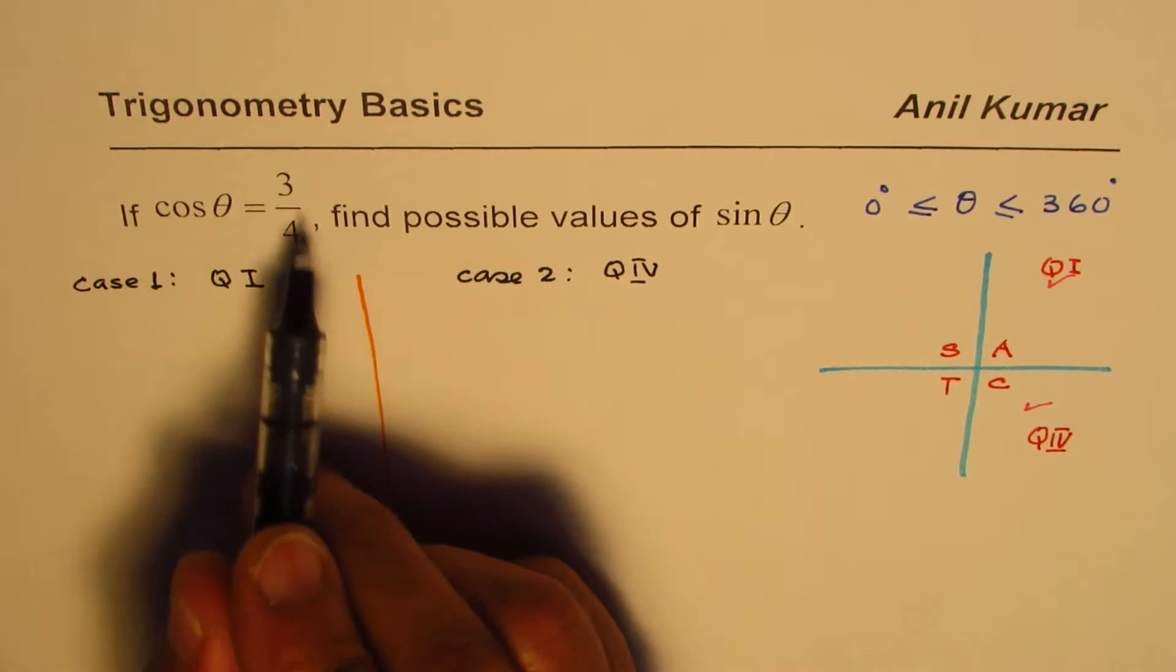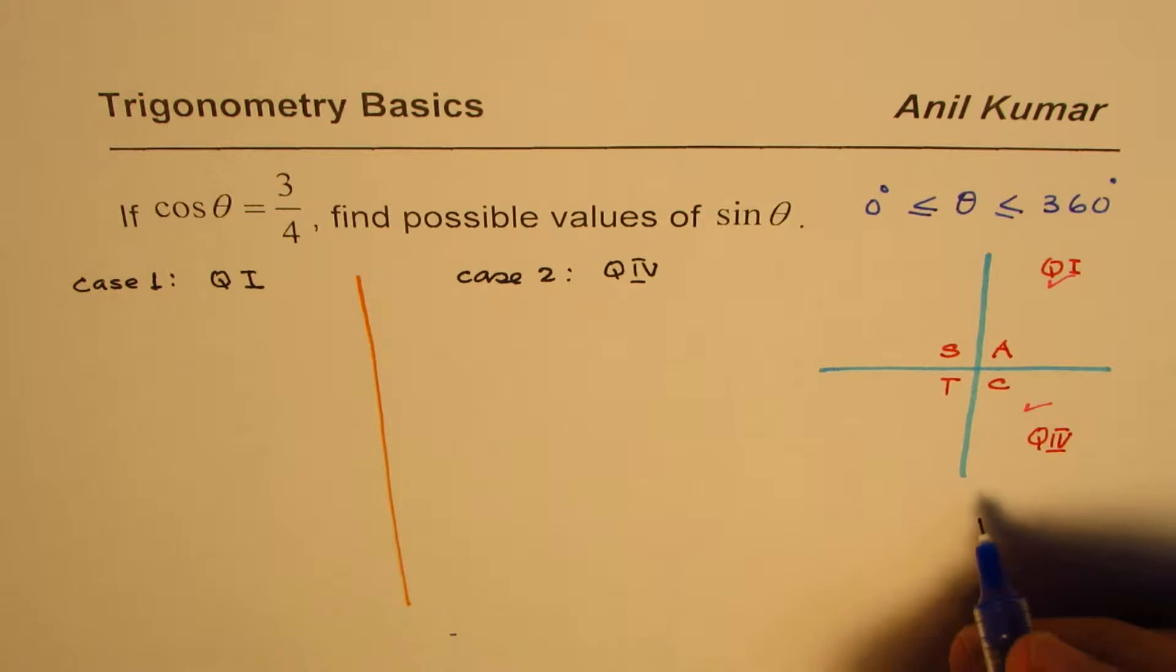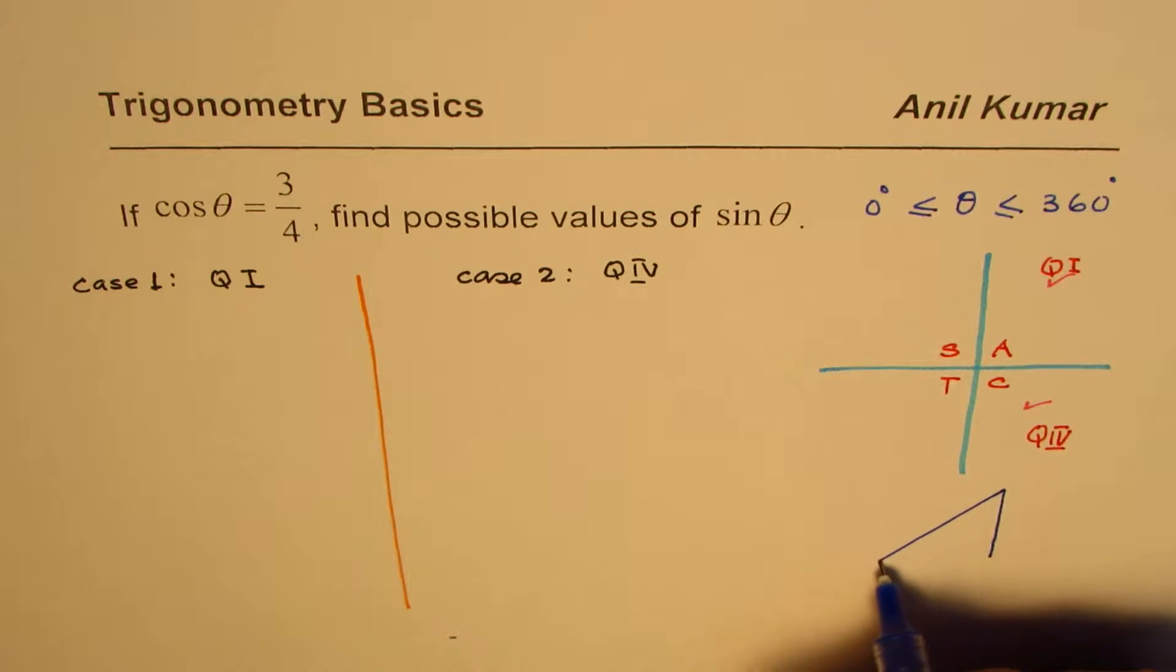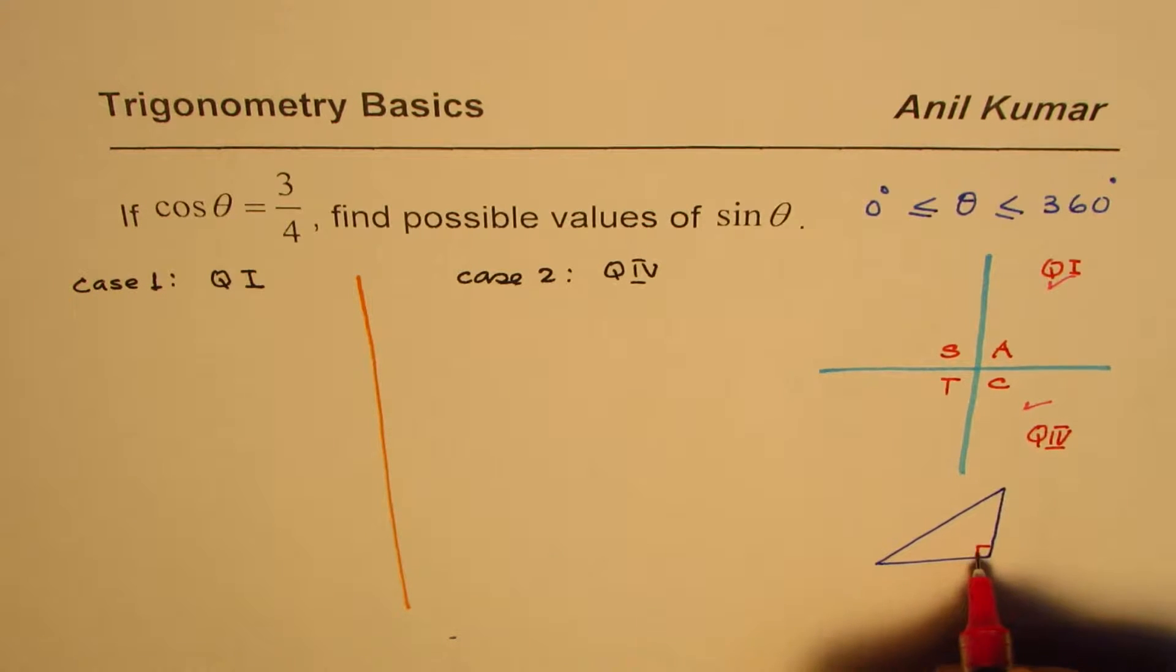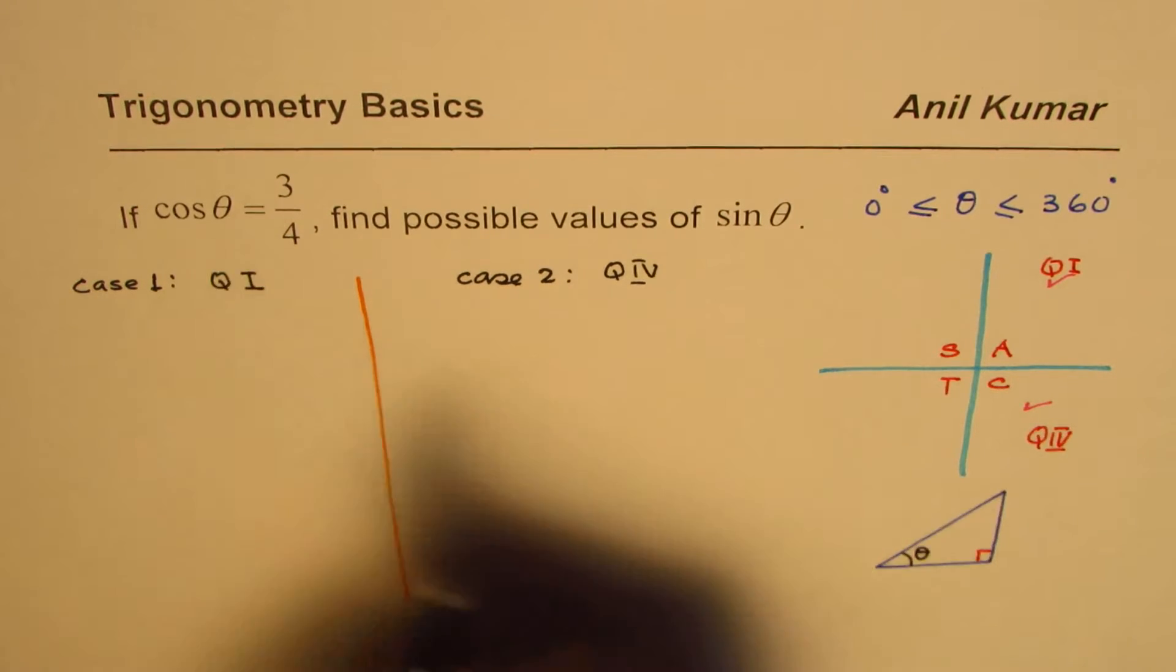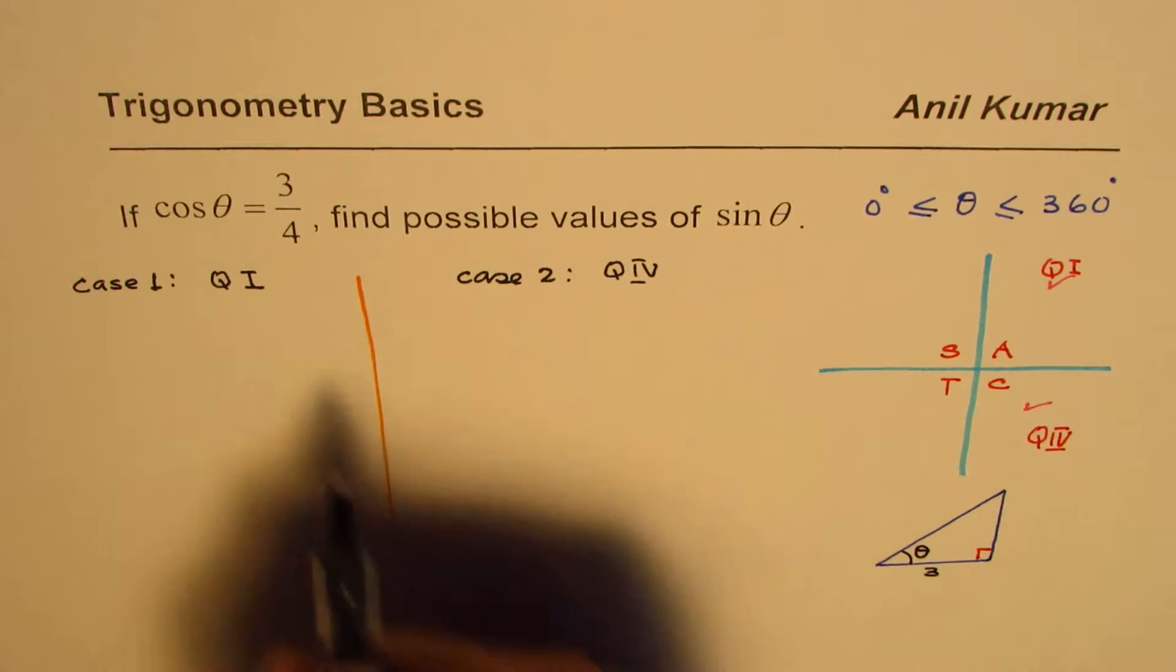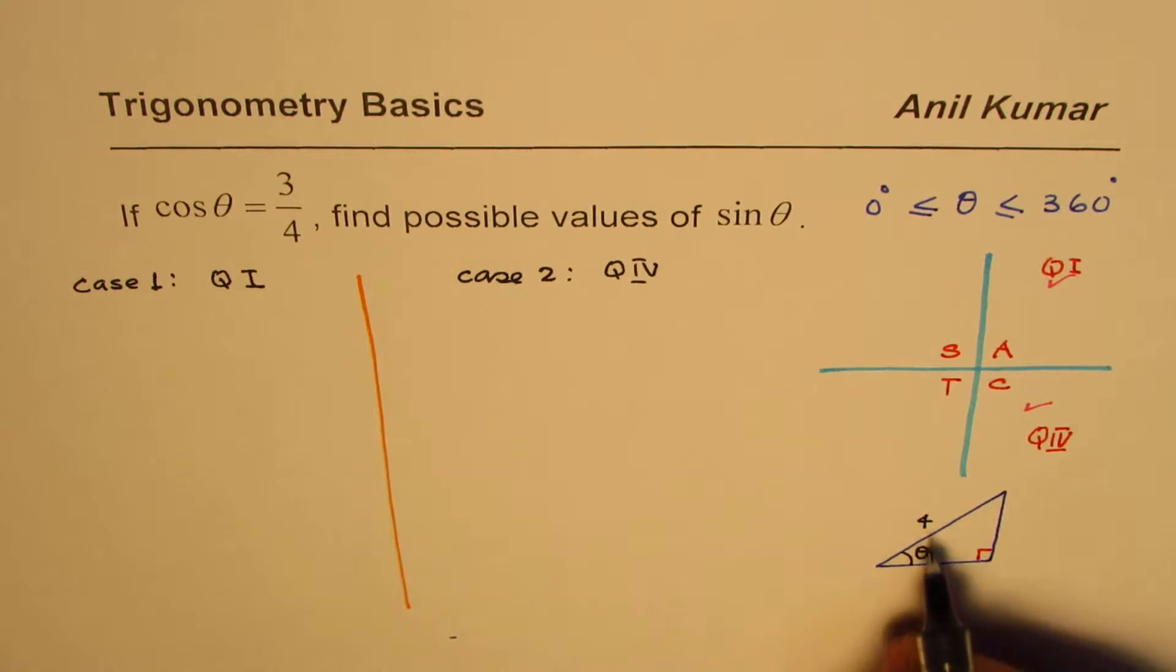Now when I say cos theta is 3 over 4, it means what? It really means that if I have a triangle, and if I am saying that cos theta is 3 over 4, then I mean to say that in a right triangle, if my angle is theta, cos is adjacent side 3 over hypotenuse 4.